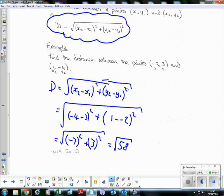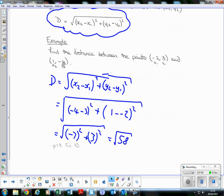√[(1 - (-2))² + (-4 - 3)²]. So this is negative seven, and this is three.